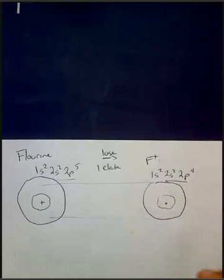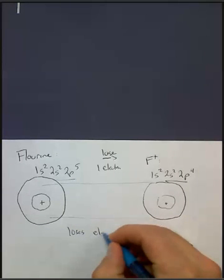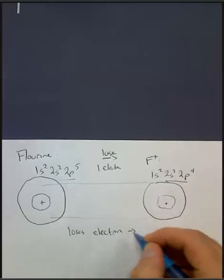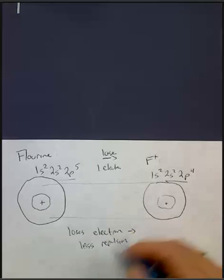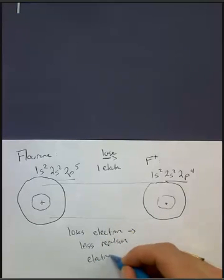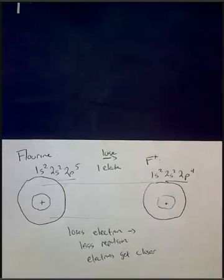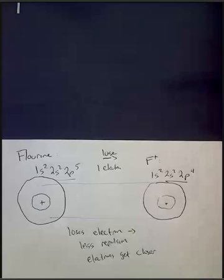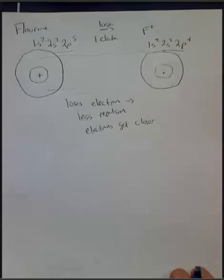It loses the electron, means we have less repulsion, means the electrons can get closer to each other. So cations are always going to be smaller than their parent atom.